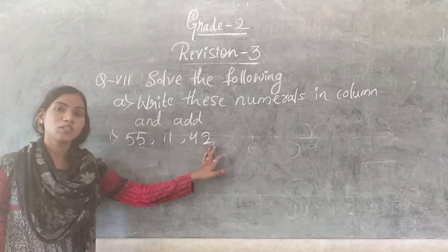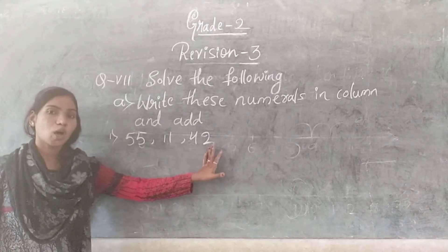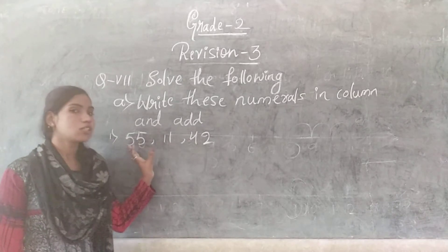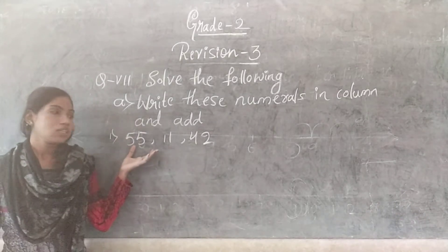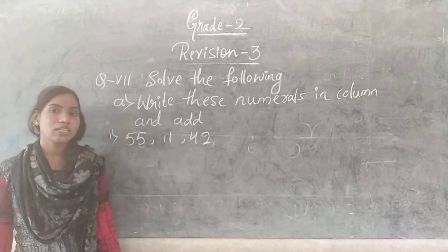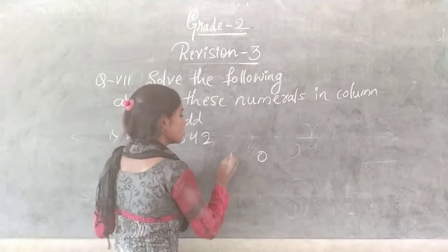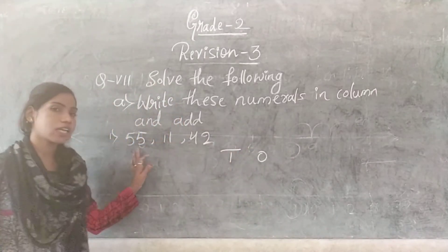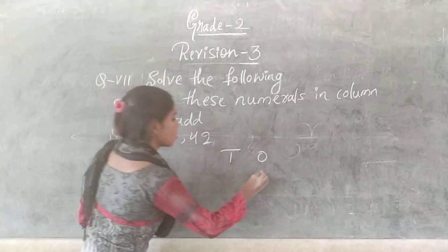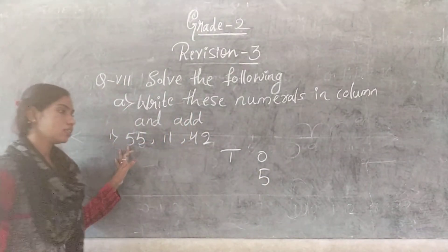All these 3 numbers are 2-digit numbers. So how many columns will come here? 2 columns. If the number is a 2-digit number then 2 columns will come — one for 1s and one for 10s. First write the number 55: 5 is at the 1s place and this 5 is at the 10s place.